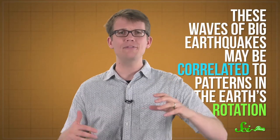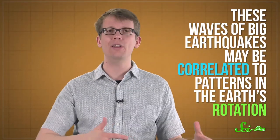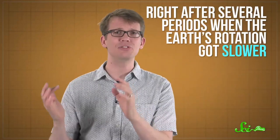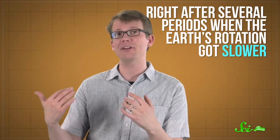And weirdly, they've found that these waves of big earthquakes may be correlated to patterns in the Earth's rotation. Now, the Earth's rotation isn't constant. The moon and gravity and other factors can slow it down by tiny amounts. And these researchers found that right after several periods when the Earth's rotation got slower, intense earthquakes happened more often.